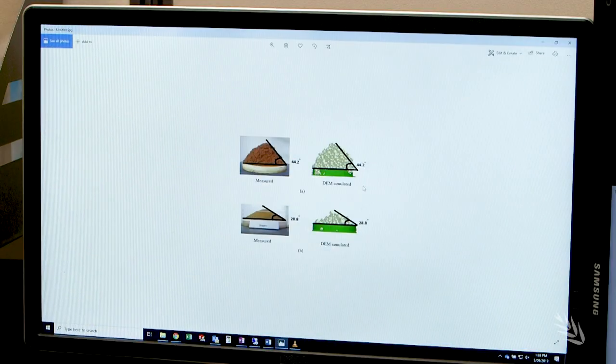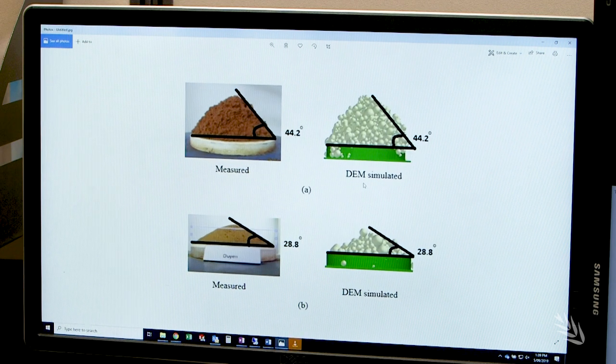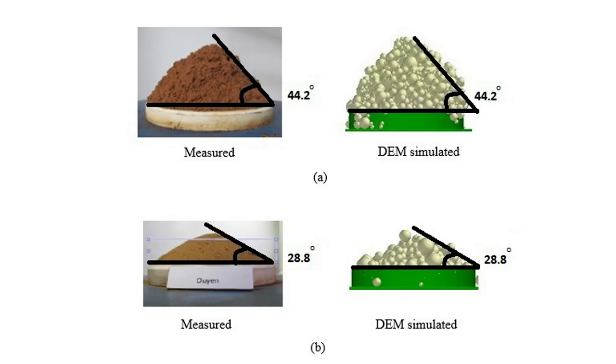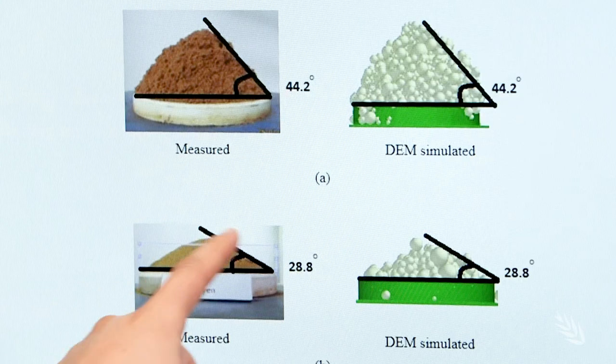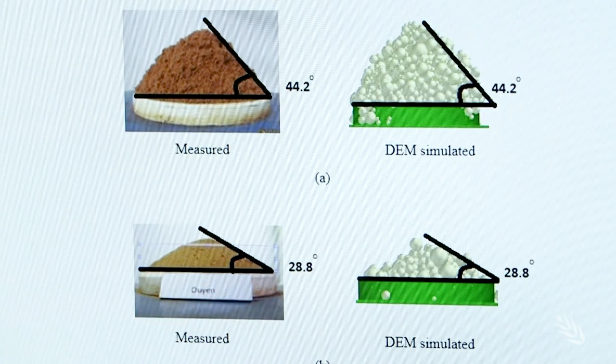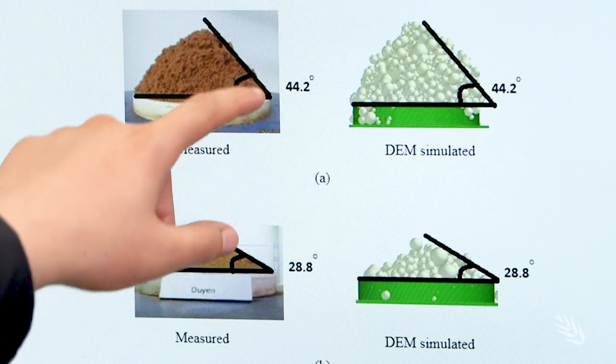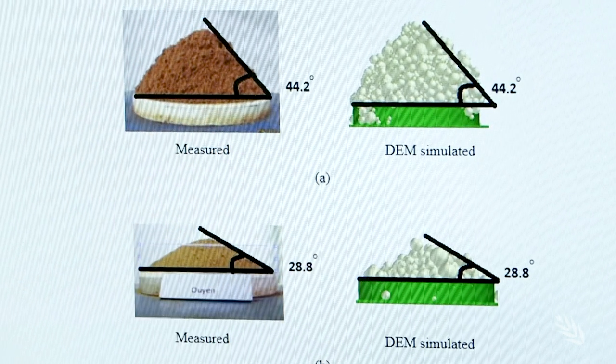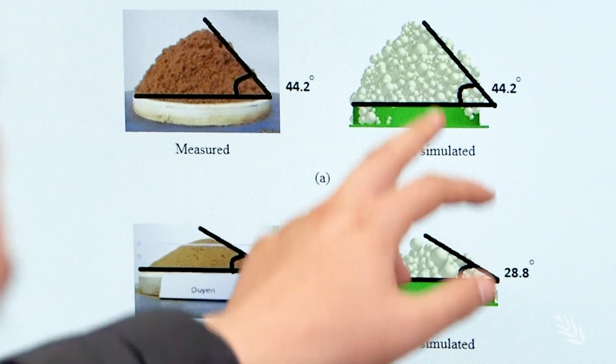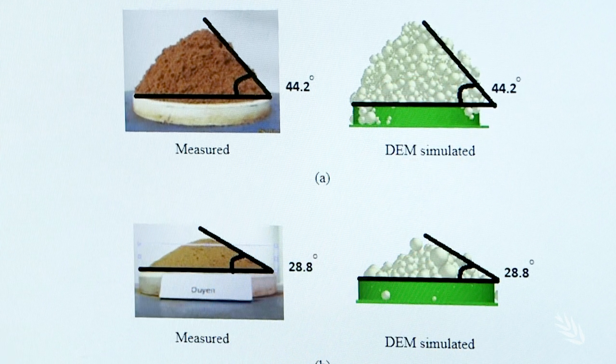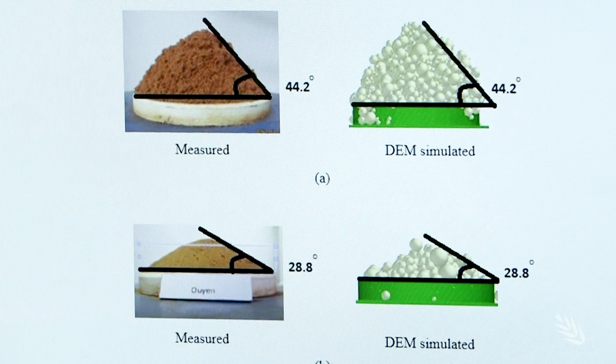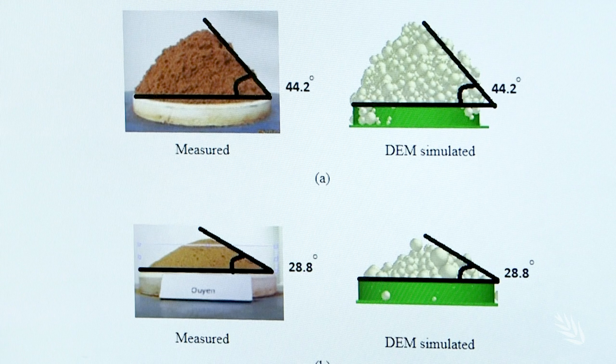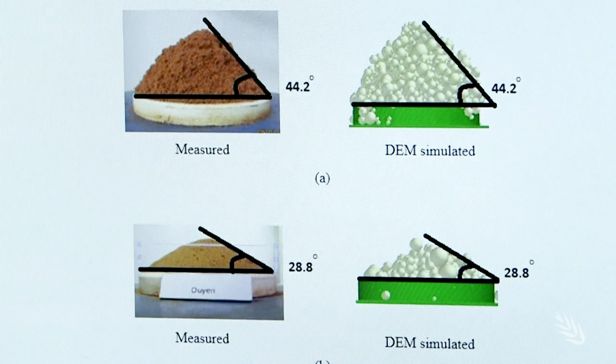The field sample is taken from the site where the ripper inclusion plate will be tested, and an angle of repose test is conducted on the soil so that the DEM's simulated soil particles can be calibrated. We'll have a low angle for dry soil and a high angle for cohesive soil. As you can see on the right hand side, the DEM simulation results basically generated the same angles: 44.2 degrees for cohesive soil and 28.8 degrees for non-cohesive or gutless soil.